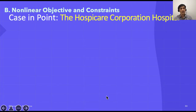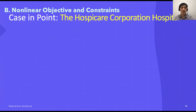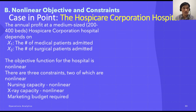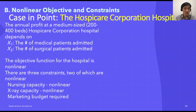The second case involves nonlinear objectives and constraints — in other words, the case includes nonlinear functions in both the objective function and the constraints. We'll use the Hospital Care Corporation as our example. This hospital has about 200 to 400 beds, and its profit depends on two factors: the number of medical patients admitted and the number of surgical patients admitted. The hospital also has three constraints: nursing capacity, x-ray capacity — both nonlinear functions — and a marketing budget.